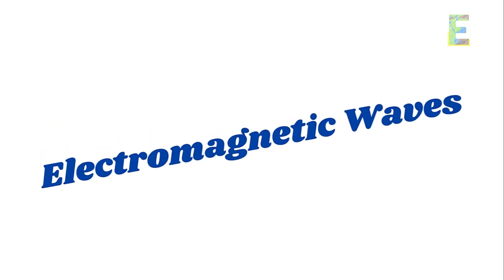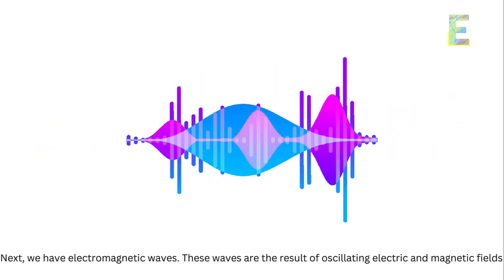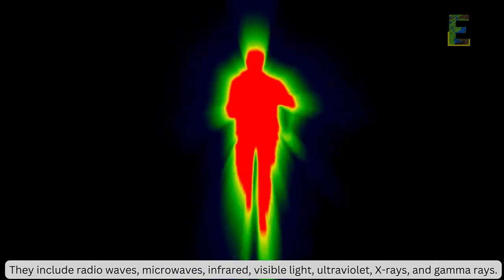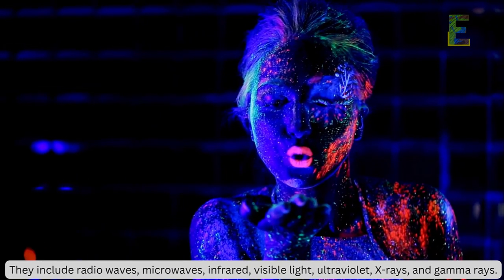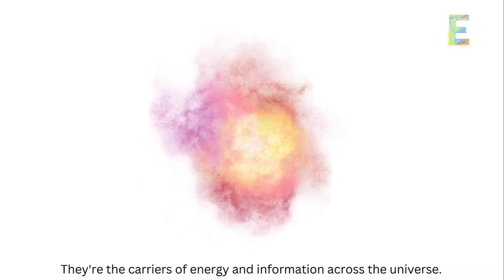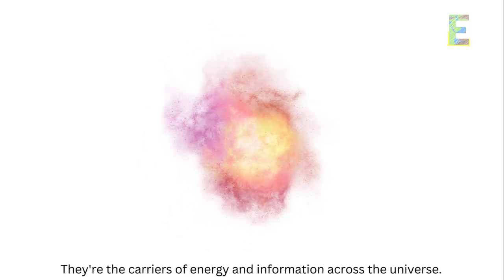Electromagnetic waves. Next, we have electromagnetic waves. These waves are the result of oscillating electric and magnetic fields. They include radio waves, microwaves, infrared, visible light, ultraviolet, x-rays, and gamma rays. They're the carriers of energy and information across the universe.